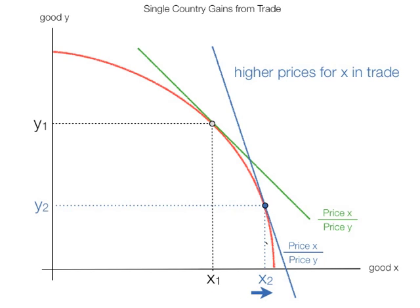What is happening is the country is beginning to specialize in producing maybe oil or coffee or whatever. They produce less of one item and more of another item. When I put the indifference curves back in, what's interesting is the country can now reach a higher indifference curve from trade, which is the blue dot up above.